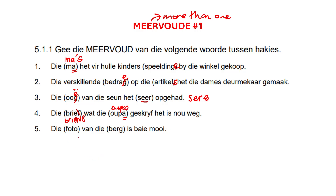Voortu. Where is the klem? It ends on an o — it ends on a vowel o. So therefore it gets an apostrophe s: voortu's. Then berg — berg ends on a g, so we're just going to add an e: berge. And that is meervoud, guys. I will see you in the next one.